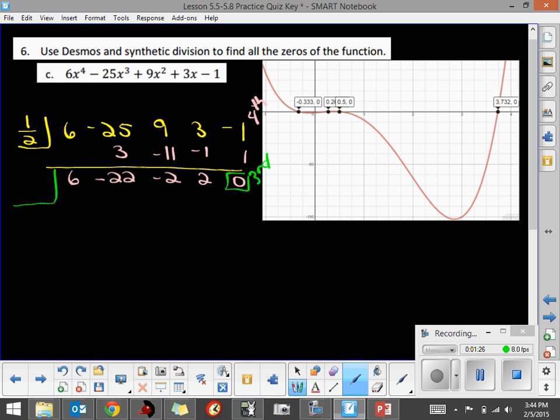So now we're going to divide by the other 0 that we knew. That negative 1 third should go in there evenly. Drop down your 6. So we're just going to divide by 3 each time. 6 divided by 3 is 2, so that's a negative 2.